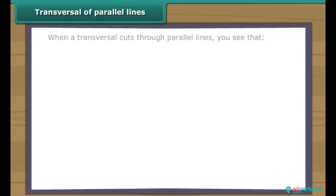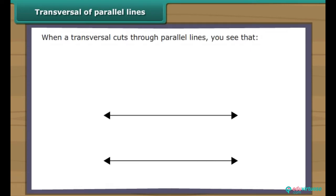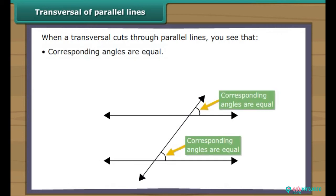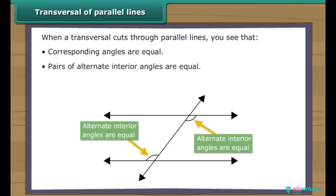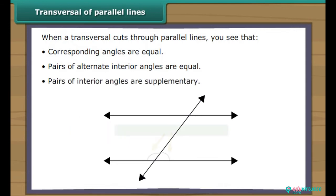When a transversal cuts through parallel lines, you will see that corresponding angles are equal, pairs of alternate interior angles are equal, and pairs of interior angles are supplementary.